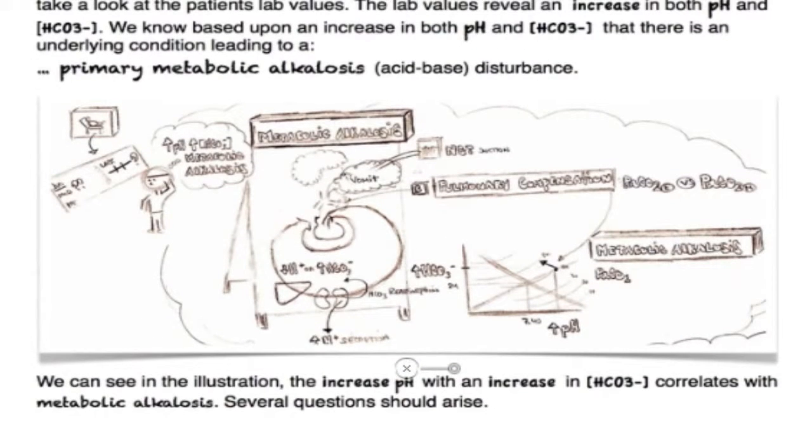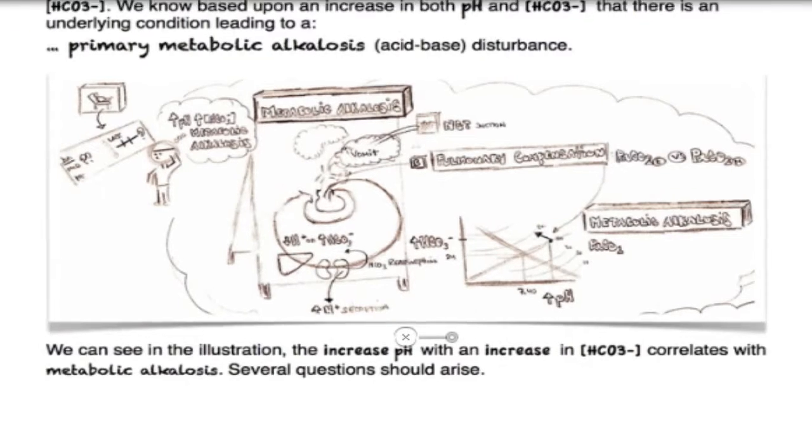We can see from the illustration, the increase in both the pH and an increase in the bicarb concentration correlates with a metabolic alkalosis. Several questions should arise.